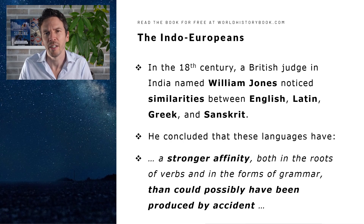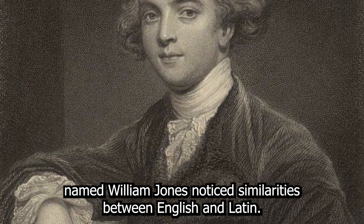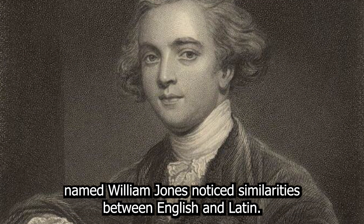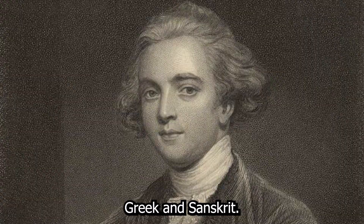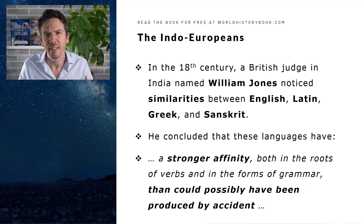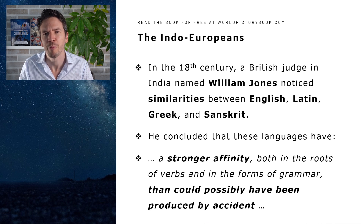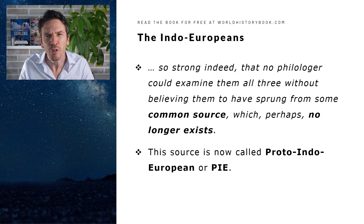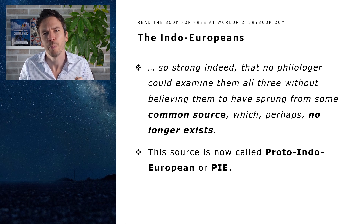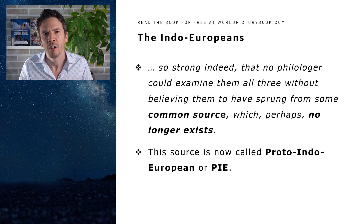In the 18th century, a British judge in India named William Jones concluded that these languages have, quote, a stronger affinity both in the roots of verbs and in the forms of grammar than could possibly have been produced by accident. So strong indeed that no philologer — no student of language — could examine them all without believing them to have sprung from a common source, which perhaps no longer exists. And this source is now called Proto-Indo-European, or PIE.